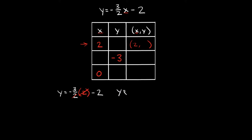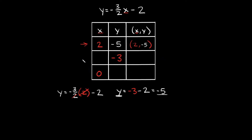So we're going to have y is equal to negative 3, minus 2. Negative 3 minus 2 is equal to negative 5. So our y-coordinate right here is equal to negative 5. Now we know our y-coordinate is negative 5, which means our y-coordinate in the ordered pair is also negative 5. Not too bad — let's keep going, and I think you'll start recognizing the pattern a little bit easier.